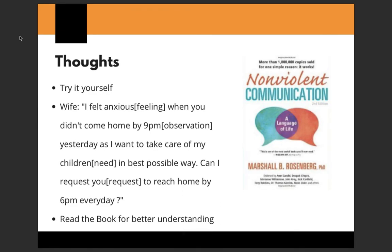A practical example: a wife says to her husband, 'I felt anxious when you didn't come home by 9 PM yesterday, as I want to take care of my children in the best possible way — can I request you to reach home by 6 PM every day?' Here, 'felt anxious' is the feeling, 'didn't come home by 9 PM' is the observation, 'want to take care of my children' is the need, and 'reach home by 6 PM' is the specific request. The husband can connect with the feeling, accept the observation, understand the need, and act on the request.